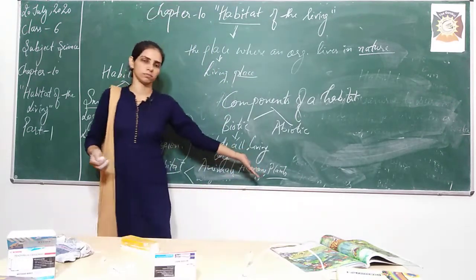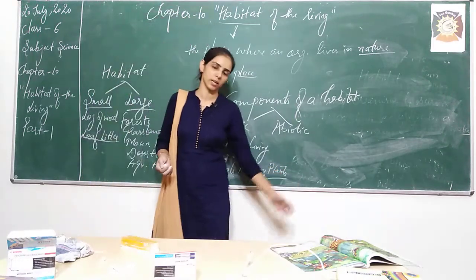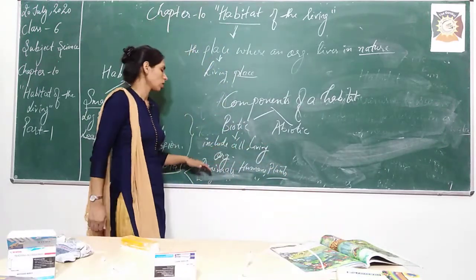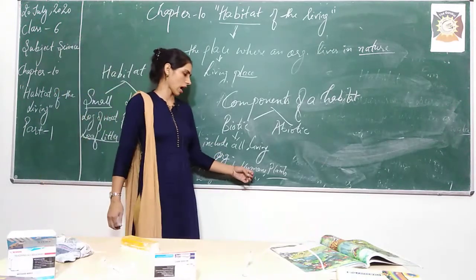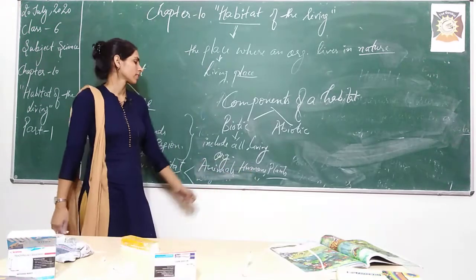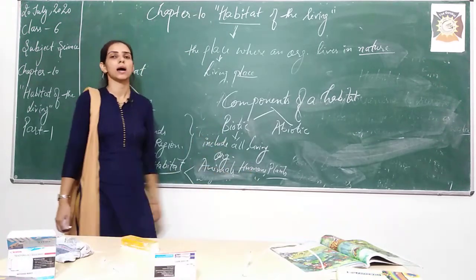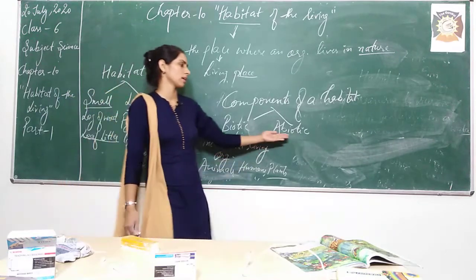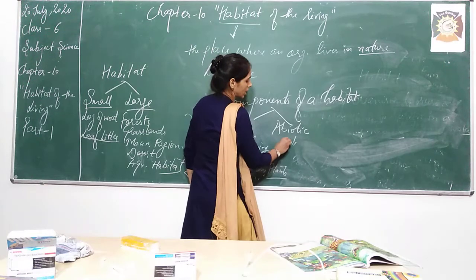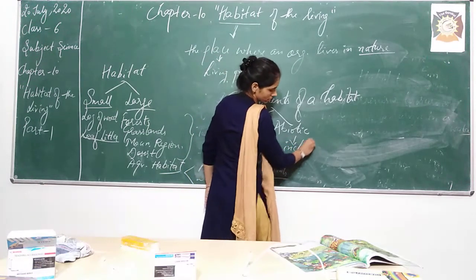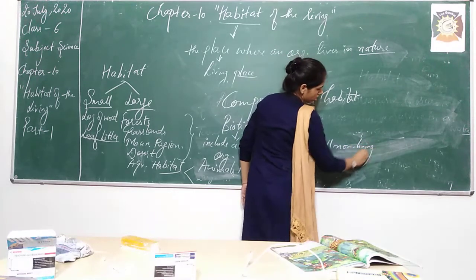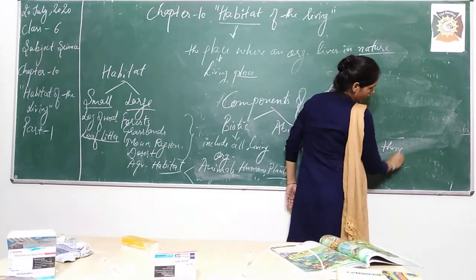Plants — not all plants can move, but yes, some plants do show movement. So all animals, humans, and plants which are living organisms come under the biotic component of the habitat. In the same manner, there are abiotic components. Abiotic components include all non-living things.